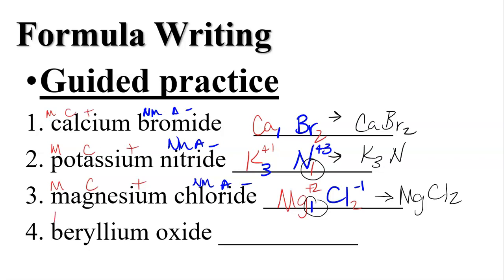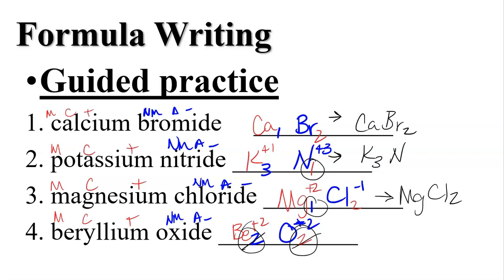Lastly, beryllium oxide. Beryllium is a metal, a cation, positive. Oxygen is a nonmetal, an anion, negative. Beryllium symbol is Be with a charge of plus two. Oxygen is in group 16 with a charge of minus two. Crisscross: oxygen gets beryllium's two, and beryllium gets oxygen's two. Our numbers are the same, so we reduce — divide by two to get one each. Our answer is BeO — beryllium oxide.